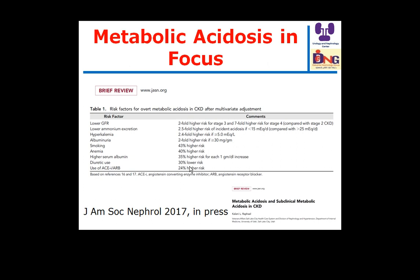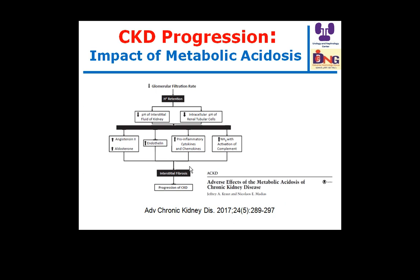Regarding metabolic acidosis and CKD progression: if there is hydrogen ion retention, this leads to reduction of interstitial fluid pH and intracellular pH of renal tubular cells, with subsequent activation of the angiotensin-aldosterone axis, endothelin axis, increasing pro-inflammatory cytokines and chemokines, and increasing NH3 with activation of complement — because excess ammonium excretion stimulates complement activation. All these pathways lead to interstitial fibrosis and progression of chronic kidney disease.